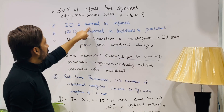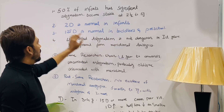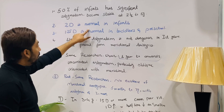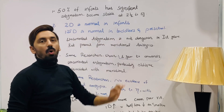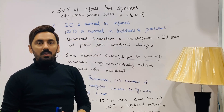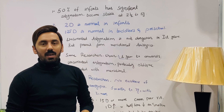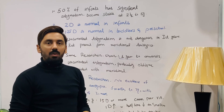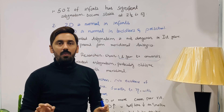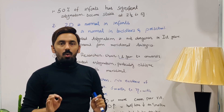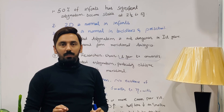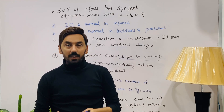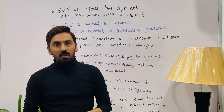Two diopters of astigmatism is normal in infants. If you find two diopters of astigmatism at the age of infancy — from newborn to one year of age — this is a normal value and there is no need to correct it.